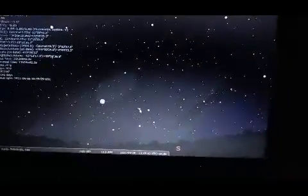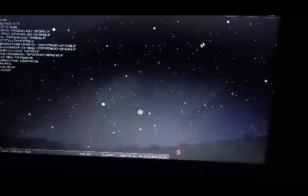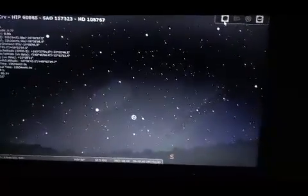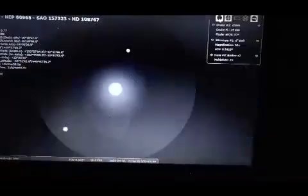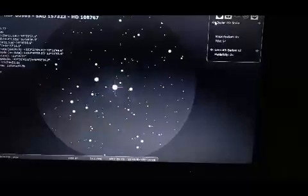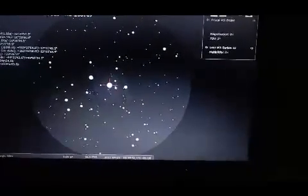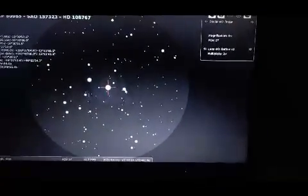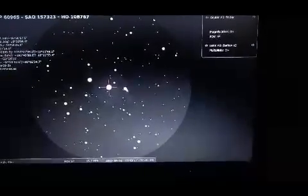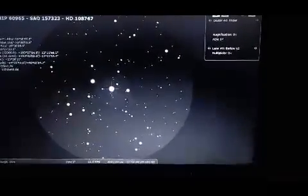So we put the finder scope on the top left hand one. Have a look through the finder scope. It should in theory be a double star. There you go, double star with a smaller dimmer one to the right of it. So this is our starting position. So we're ready to do the star hop.